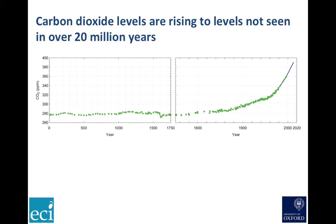The green dots in this diagram show carbon dioxide concentrations from bubbles trapped in ice cores, while the blue line shows David Keeling's measurements. The left panel goes back 2,000 years, showing CO₂ concentrations have been very stable before industrial emissions began. Notice the change in timescales between the two panels.